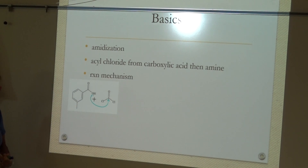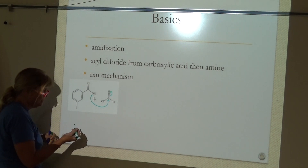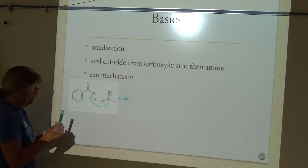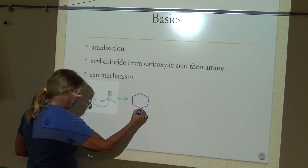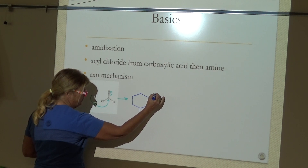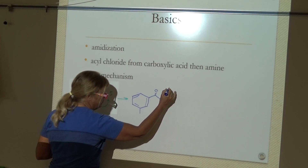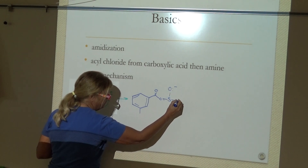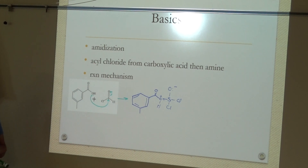Now, that sulfur already has four bonds. As it accepts a new bond, something has to give, and the most likely thing is the pi bond to the oxygen. As we know, pi bonds are weaker than sigma bonds. This gives us our zwitterion intermediate.